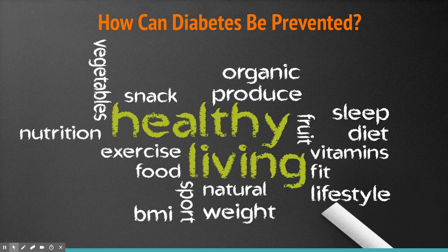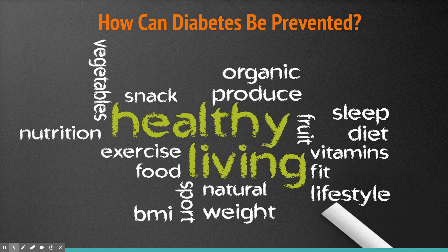To prevent diabetes, healthy living is the primary approach. Eat plenty of healthy vegetables and fruits, choose healthy snacks, and consult a nutritionist if needed. Maintain a healthy BMI and body weight. Make sure you sleep well, eat a balanced diet, and exercise regularly. Avoid spending excessive time in front of screens — instead, go for a 20-minute walk, use the stairs more frequently. These lifestyle steps are key when it comes to preventing and treating diabetes.